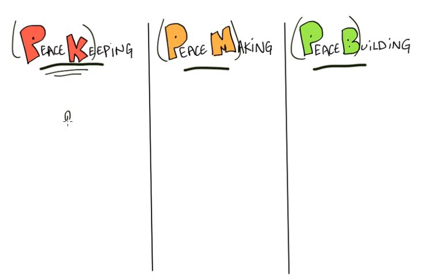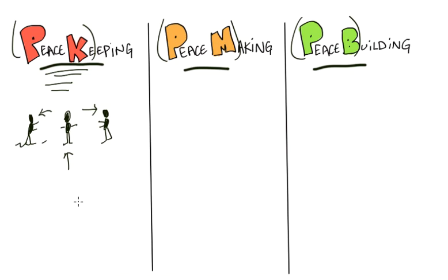Peacekeeping basically means that you have someone — we'll draw a little stick figure here — that is keeping two opposing sides apart from each other. Think of a schoolyard fight and how those usually end: you usually have a vice principal that comes running, and he tries to keep them apart so that they're not fighting anymore. In terms of global politics, that's the same thing — a third party intervenes and just makes sure that people are not fighting anymore, that the guns are put down. I've used the red color here to show that that's sort of in the heat of violence, and it's just trying to make the violence stop.